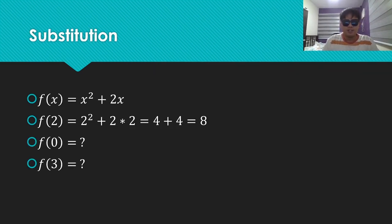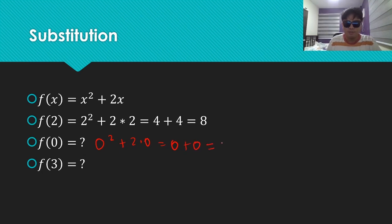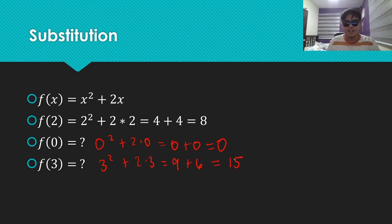Let's have a crash course in substitution. We have the function f of x equals x squared plus 2x. Substituting x equals 2, we get f of 2 equals 2 squared plus 2 times 2, which evaluates to 4 plus 4, which is 8. How about f of 0? Substituting 0 into x, we get 0 squared plus 2 times 0, which is 0 plus 0, which is of course 0. How about f of 3? Substituting 3, we get 3 squared plus 2 times 3, which is 9 plus 6, which is 15. And that is f of 3.